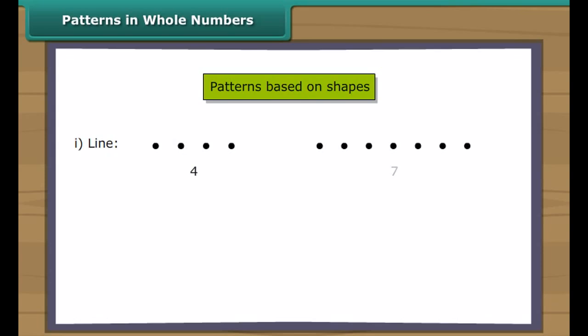Patterns in whole numbers. Numbers can be arranged in some elementary shapes using dots. The shape could be a line, square, rectangle, triangle. Every number can be arranged as a line, for example.